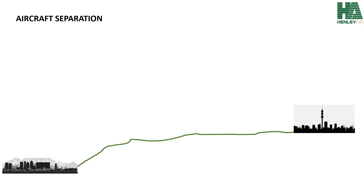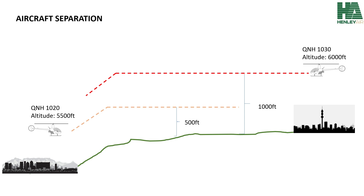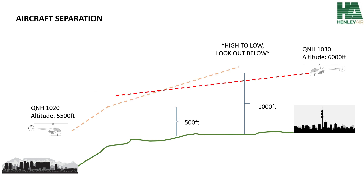If we look at aircraft separation, let's say we have one aircraft taking off from Cape Town on a local QNH of 1020. This pilot is planning to fly at an altitude of 5,500 feet, which will eventually give him 500 feet AGL. On the other hand, we have an aircraft taking off from Johannesburg wanting to fly to Cape Town, planning on flying at 6,000 feet — 1,000 feet AGL — on a QNH of 1030. There is a meteorological saying: high to low, look out below, meaning that if you fly from an area of high pressure like Johannesburg at 1030 to an area of low pressure, the actual height above the ground will be decreasing as you go. And of course, you can see a problem coming.